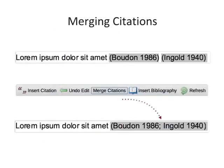Many publishers require adjacent citations to be combined into a single, properly styled format. Mendeley can handle this for you. Just insert two separate citations, highlight them both in the word processor and press Merge Citations to combine them.